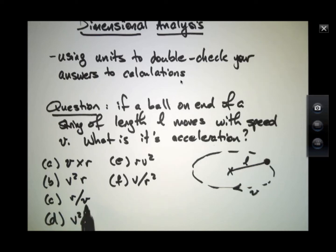This is length divided by length over time, which just becomes time in the end. The lengths will cancel out.